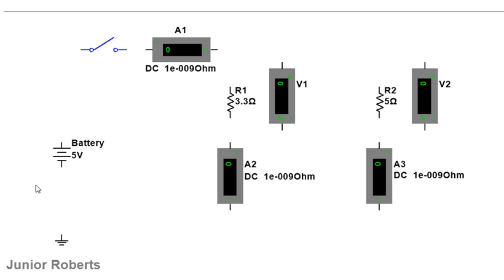We have previously looked at a series circuit and discussed its characteristics. Now we're going to move on to the parallel circuit and discuss its characteristics. We have our components laid out just like we would in a circuit diagram. We have a battery, a switch, ammeters A1, A2, and A3, two voltmeters, resistors R1 and R2, and a ground signal to ensure the simulation works.